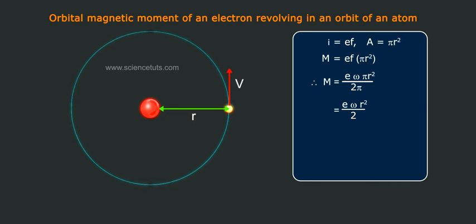E omega R square by 2. M equals E by 2M into L.